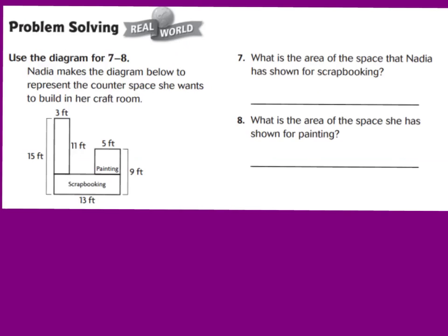Let's look at numbers seven and eight in the problem-solving portion of your GoMath book. It says Nadia makes the diagram below to represent the counter space she wants to build in her craft room. Number seven asks for the area of the space shown for scrapbooking, and number eight asks for the area of the space shown for painting. Note that the painting area is a perfect square. Go ahead and answer these two questions, then press play when you're ready to go over the answers.